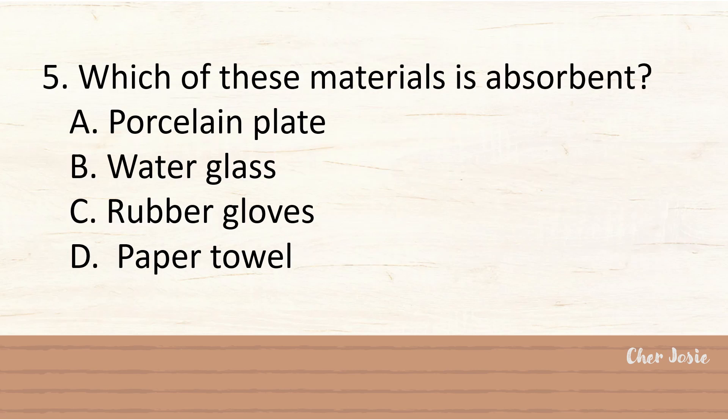Number 5. Which of these materials is absorbent? A. Porcelain plate? B. Water glass? C. Rubber gloves? Or letter D. Paper towel? The correct answer is letter D. Paper towel. I hope you all got 5 correct answers.